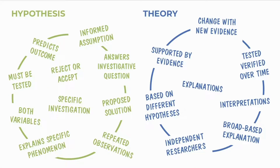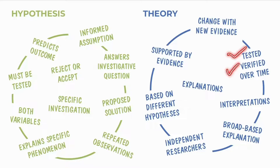In summary, a theory provides explanations and interpretations of observations. It is a broad-based explanation rather than a specific one and may include many different hypotheses. A theory explains ideas that have been tested and verified over time, should be supported by evidence from different sources and independent researchers, and can change as more observations and facts become available. Examples include cell theory and Darwin's theory of evolution.